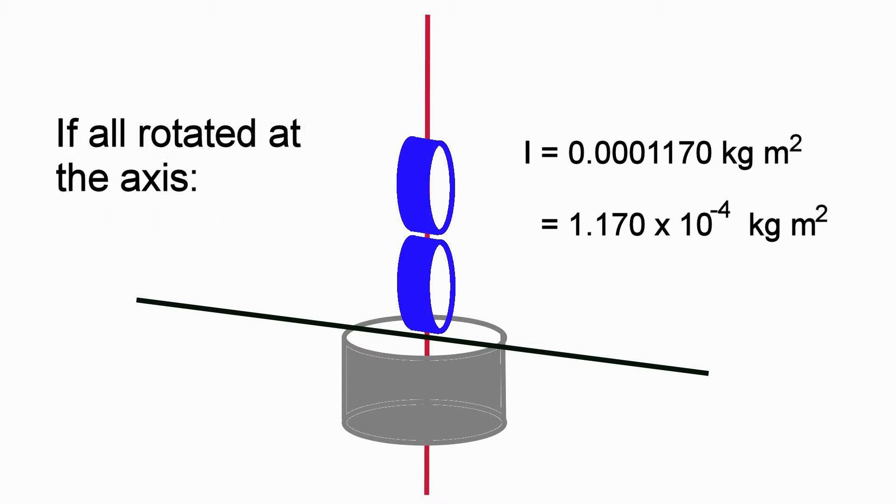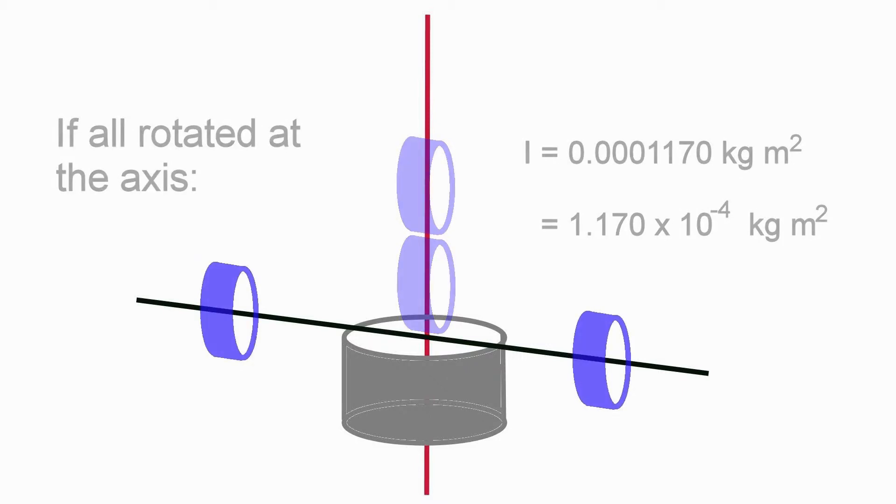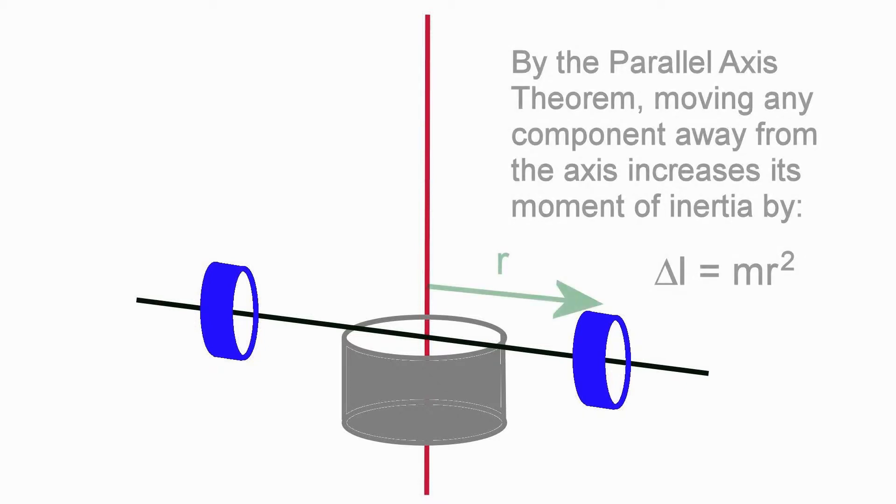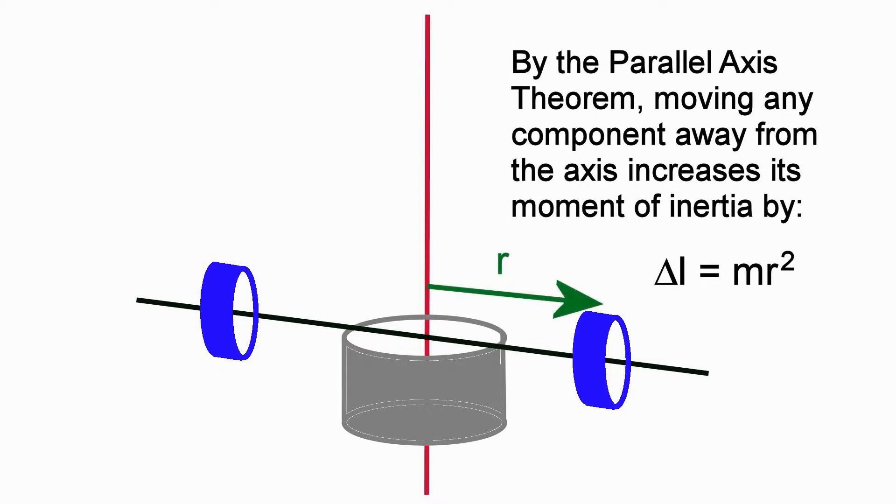Adding the moments of inertia for the components gives us the total moment of inertia for the object, although we're still left with the unrealistic assumption that both sets of washers are located at the axis of rotation. Fortunately, there's a mathematical model to account for moving the washers. The parallel axis theorem tells us that the moment of inertia for each of the sets of washers will increase by its mass times the square of its distance from the axis.